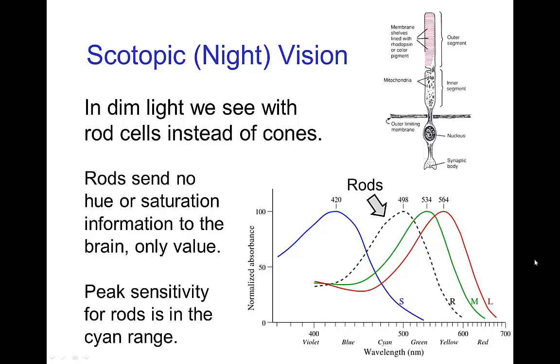One last topic about value is that under very dim lighting conditions, and this typically would be just in a very dark night with minimal amount of artificial lighting, the cones basically turn off and our vision is due instead to the rod cells in our retina. Now the rods do not distinguish color, so they don't send any hue or saturation information to the brain, only value.